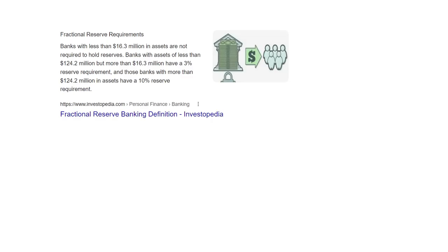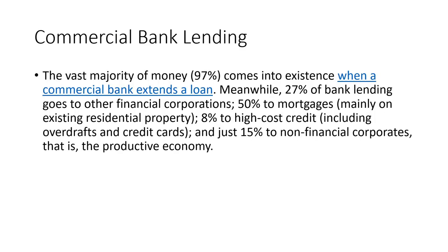The Federal Reserve fractional reserve requirements: banks with less than $16.3 million in assets are not required to hold reserves. Banks with assets between $16 million and $124 million have a 3% reserve requirement. Banks with more than $124 million in assets have a 10% reserve requirement. Commercial bank lending is where the vast majority of the money is created — approximately 97% of the money supply — and it happens when a commercial bank extends a loan.